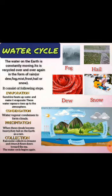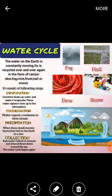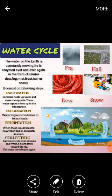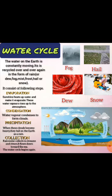The third step is precipitation. When the tiny droplets of water combine together to form a cloud, the clouds become heavy and fall on the earth as rain. This process is known as precipitation.